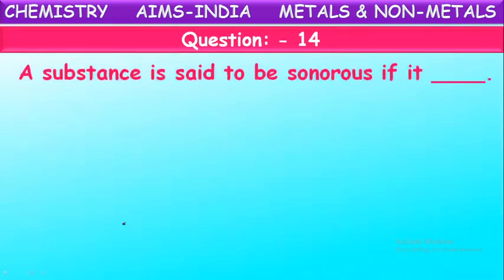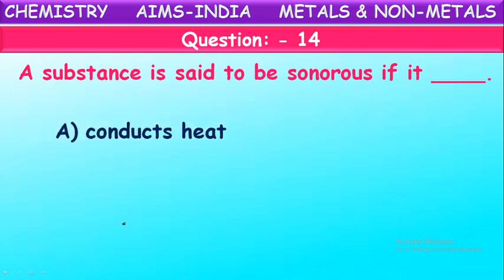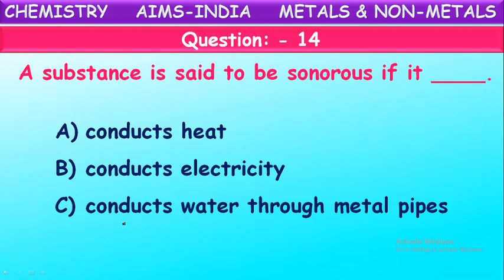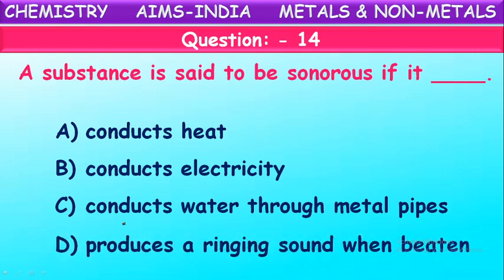Next question: A substance is said to be sonorous if it - conducts electricity or heat, conducts water through metal pipes, or produces a ringing sound when beaten? A substance is said to be sonorous when it produces a ringing sound when beaten.